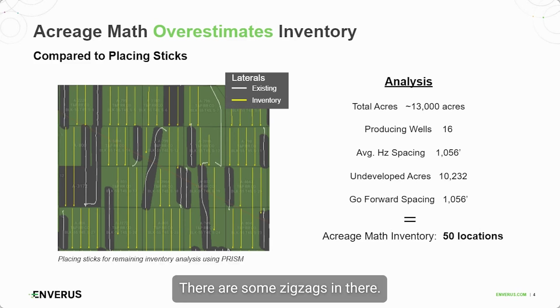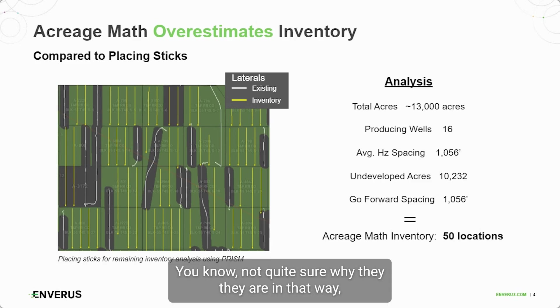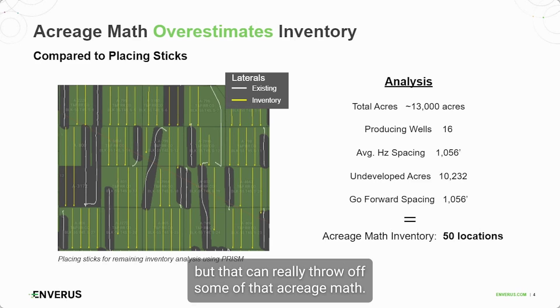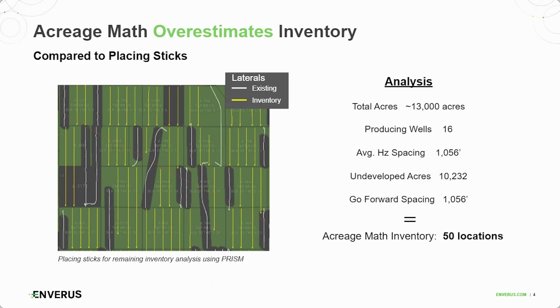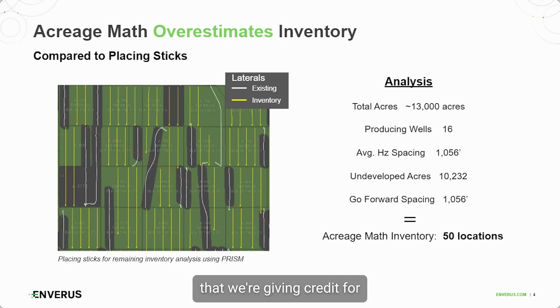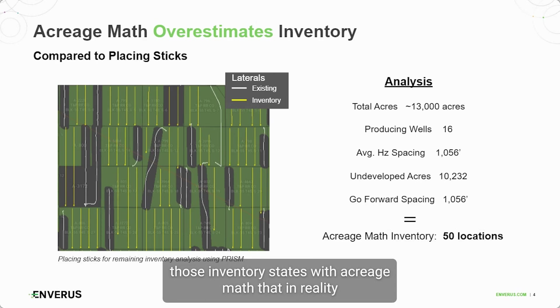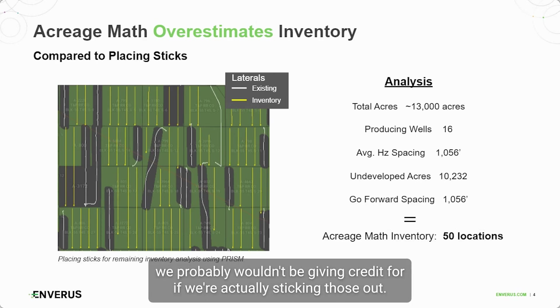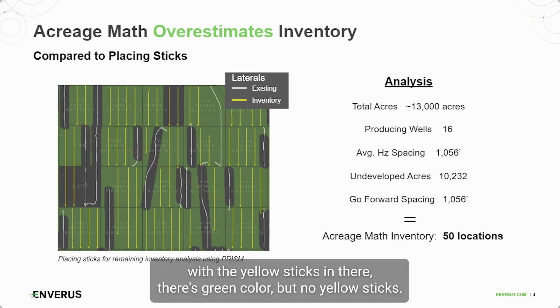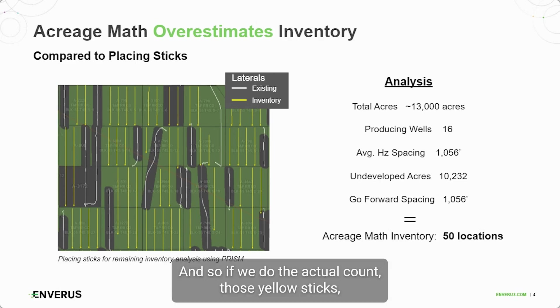Some of those historic wells were drilled irregularly — there are zigzags — and that can really throw off acreage math. You can see there are green areas where we're giving credit for inventory locations under acreage math, but in reality we probably wouldn't give credit for those if we're actually sticking them out, as evidenced by the yellow sticks: there's green color but no yellow sticks in those areas.